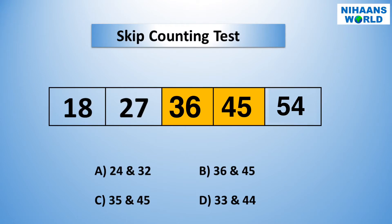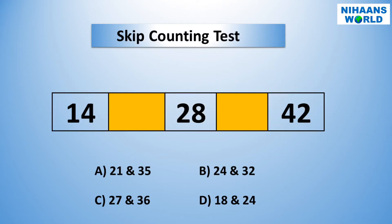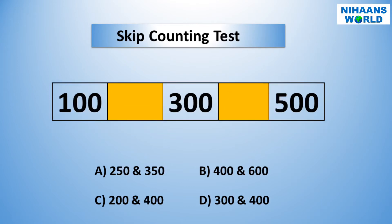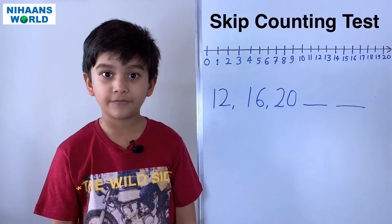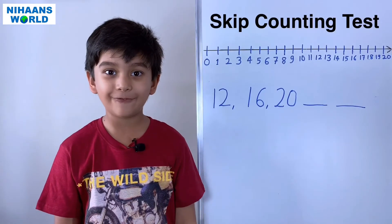Let's find the missing numbers. Friends, can you tell me? The answer is eight, twenty-one, and thirty-five. Let's find the next missing numbers. You are right — the answer is C: two hundred and four hundred.